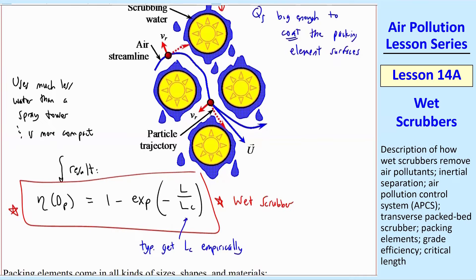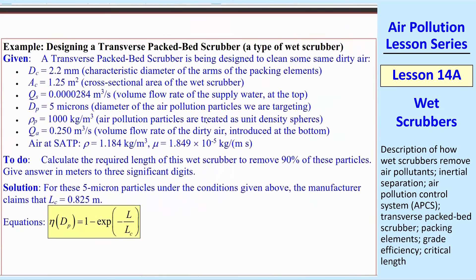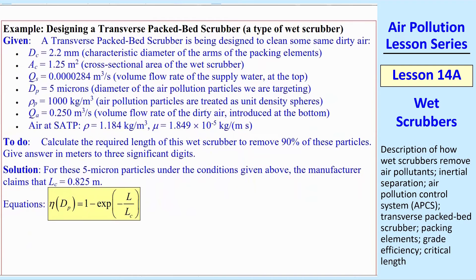Typically, you get LC empirically. In other words, by experiment. As a function of DP, once you have this whole thing set up, you just have to take some measurements. So let's do an example problem. Here's some dirty air. I give you the characteristic diameter of the arms of the packing elements and cross-sectional area.